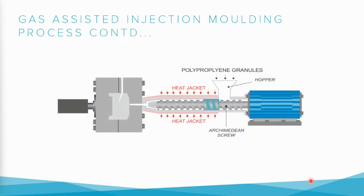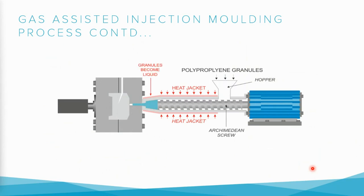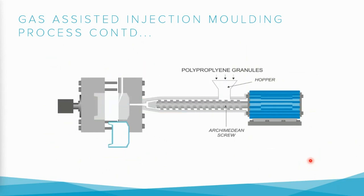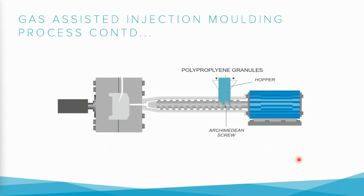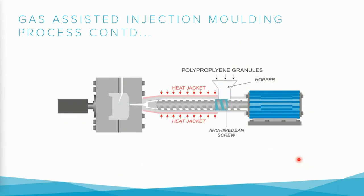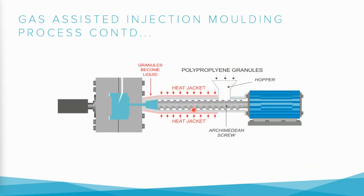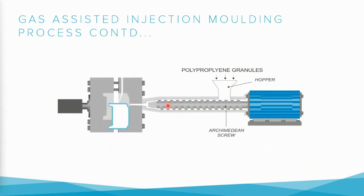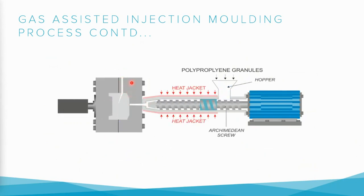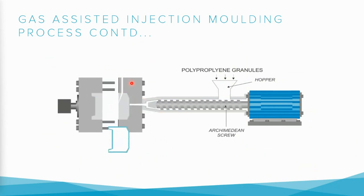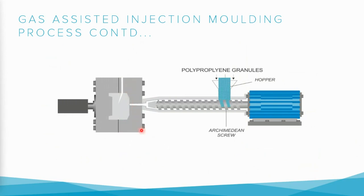Now let us see this full process visibly through animation. We feed the polypropylene material from the hopper; the material goes into the mold. At the top there is a channel from which inert gas is pushed into the mold, making the interior of this shape hollow from inside.